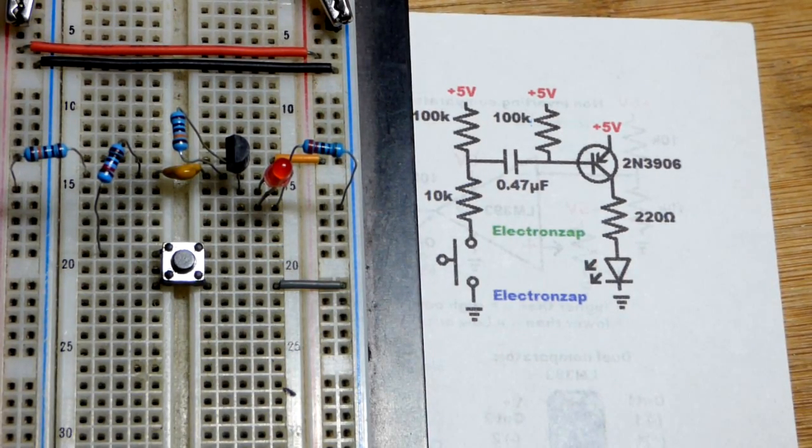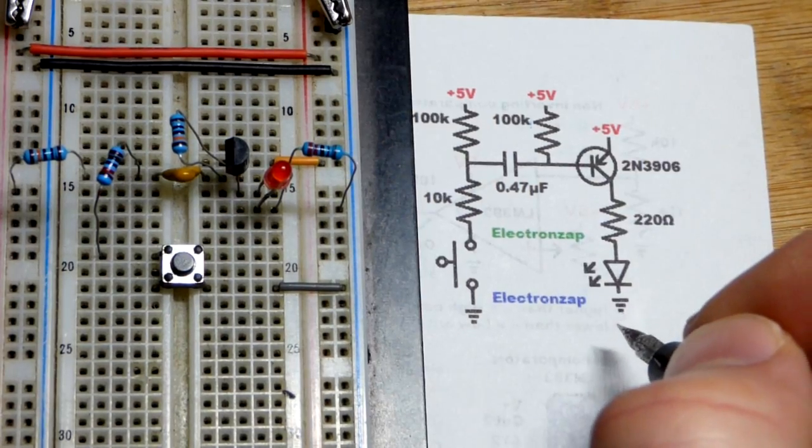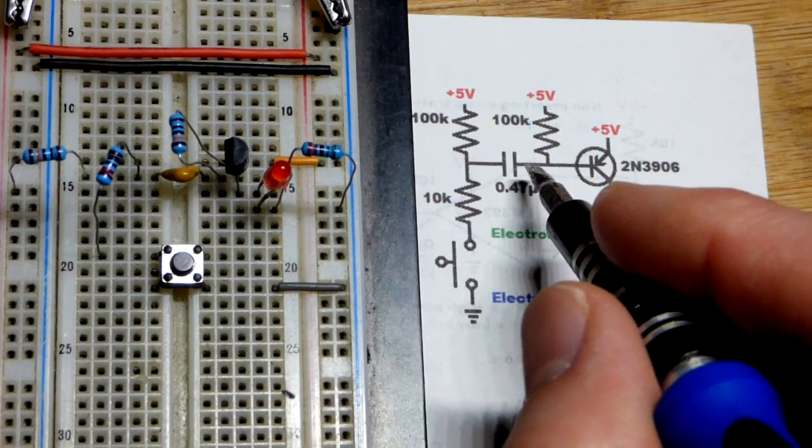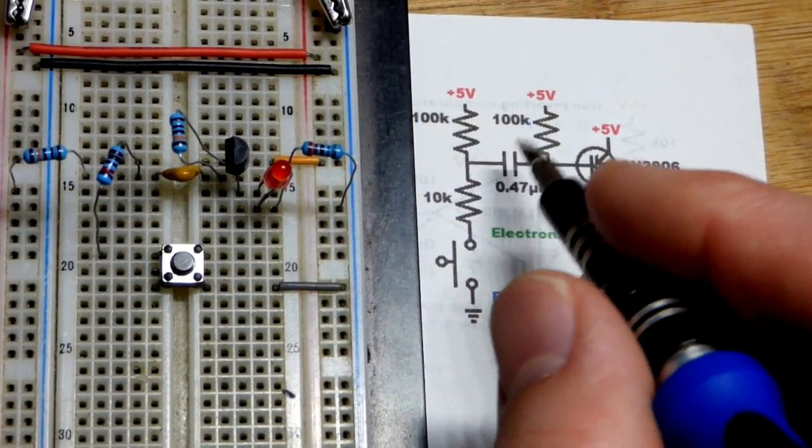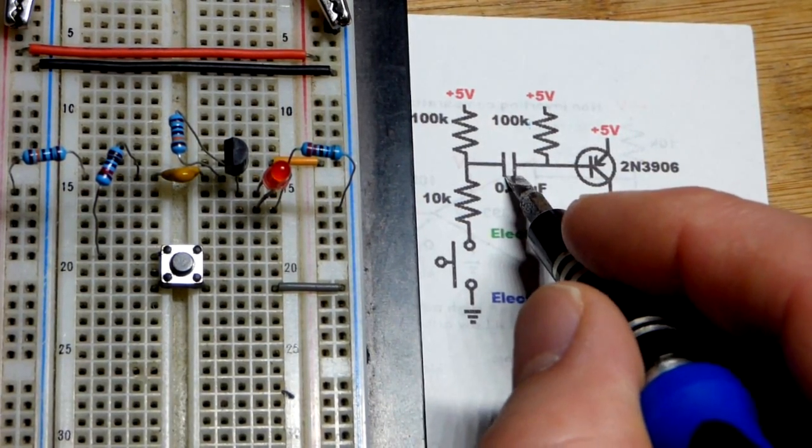So in case we press the button, capacitor charges. Well it does, we got that flash. Once it's charged, everything comes to a stop because there's no more emitter to base current. Even though we're pressing the switch, the capacitors don't pass direct current. Current doesn't keep flowing once capacitor is charged, it stops.